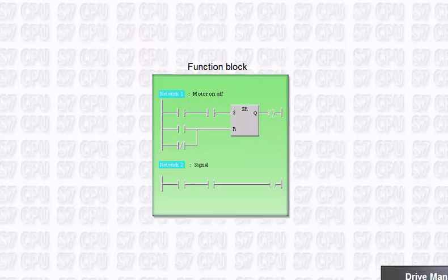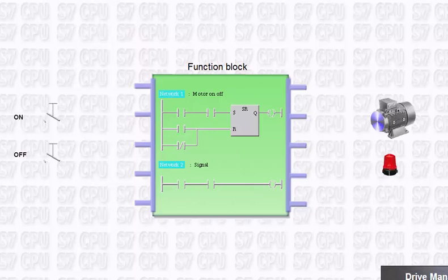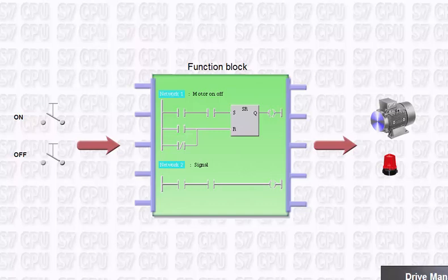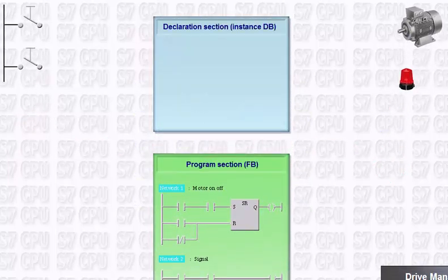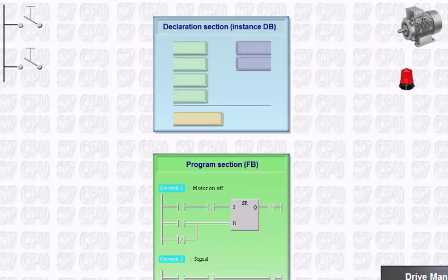A simple user program is used to illustrate how a function block communicates with the various memory areas of the CPU via its parameter interface. The ladder diagram displayed here implements a simple multi-usable motor block. The motor is switched on and off via push button. The on status is additionally displayed via a blinking signal. The block can be used repeatedly for the same motor type. A certain motor is selected merely by assigning the interface.